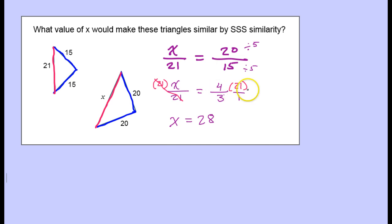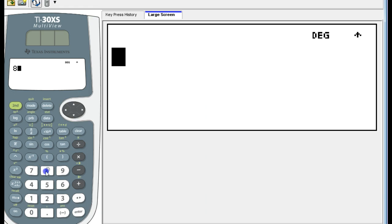If we multiply 4 times 21, that'll be 84. So that would give us x equals 84 over 3. And then it's just a matter of what's 84 divided by 3. 84 divided by 3, oh look, 28, like I said.